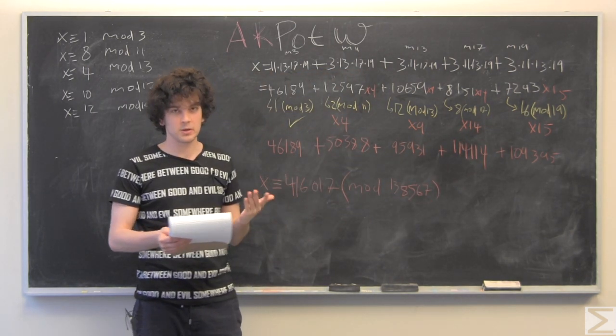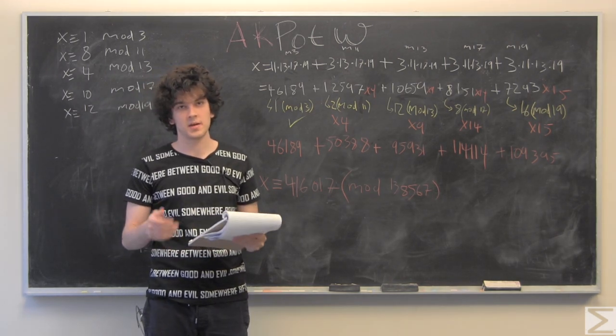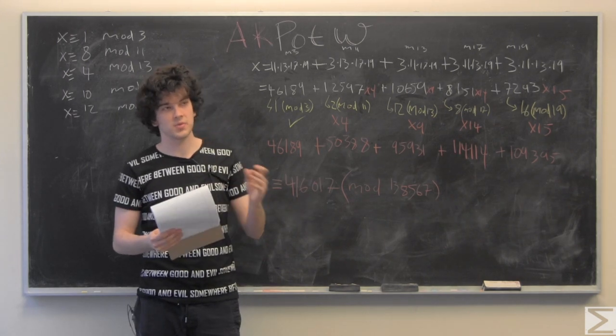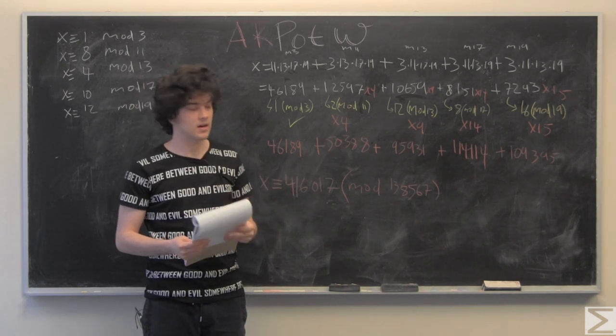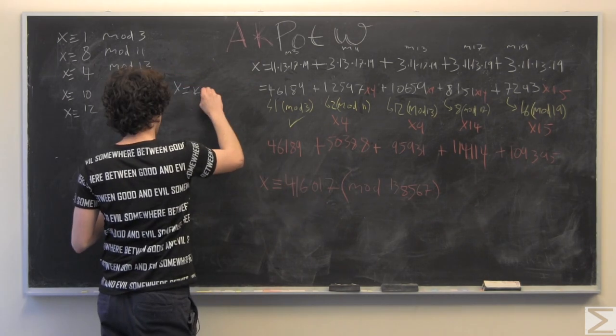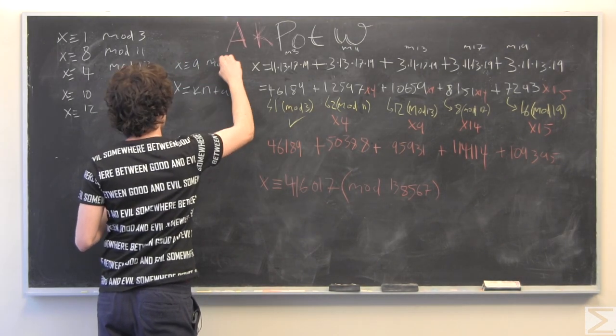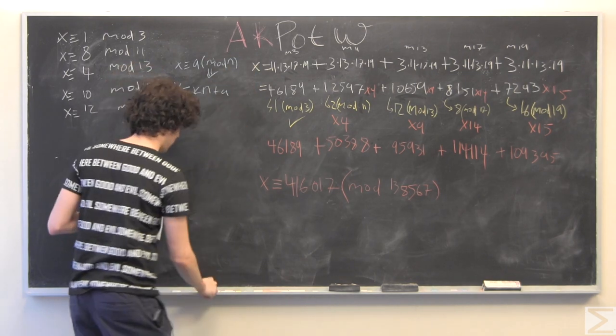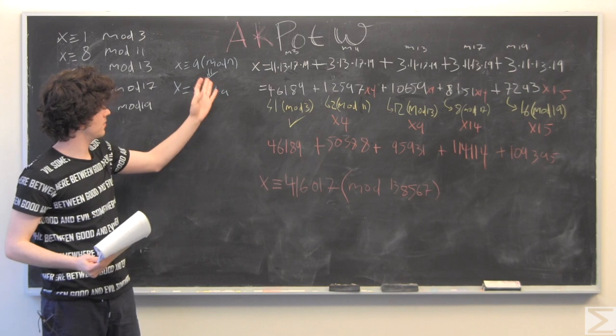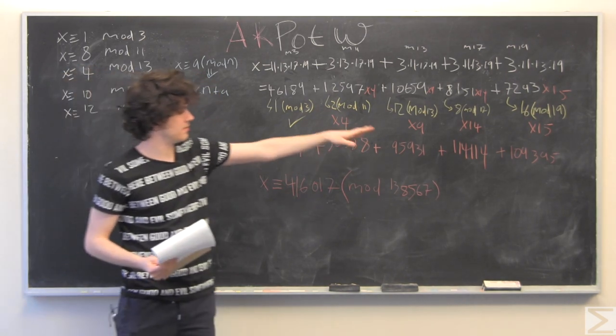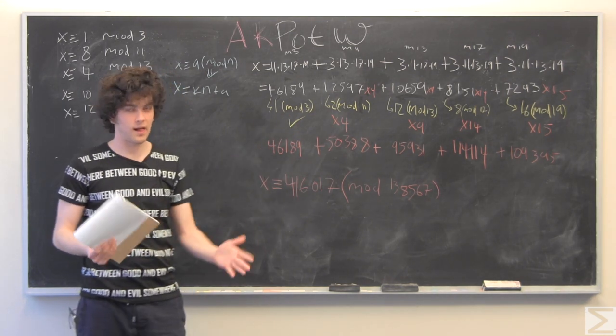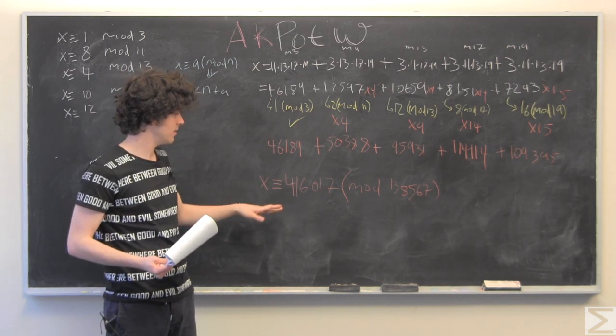And, if you're wondering how I do this, X being congruent to some number A mod N means X equals K times N plus A. So, I just plug in different values for K, here, I'll write that relation here. So, first, you do 1, 2, 3, and check out when you have the correct, you have the right remainder.